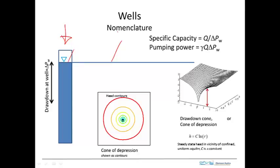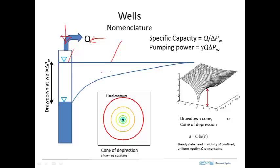We'll put in a pump and start pumping water out of the well. We have a volumetric flow rate, Q, that is being removed from the well. That will cause the water level to fall in the well, and the water level in the formation out in the aquifer will also fall. This would be the new water table under pumping conditions. The difference between the static water level and the water level during pumping is called the drawdown.